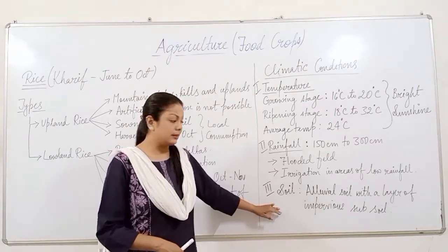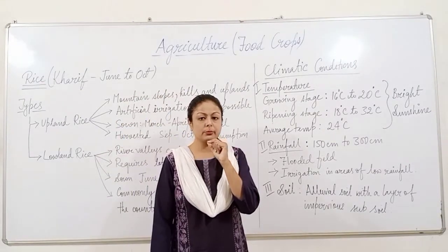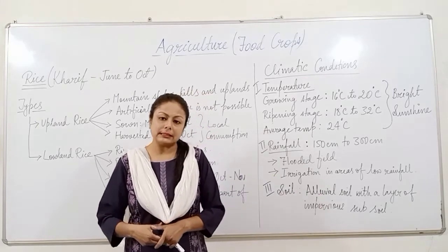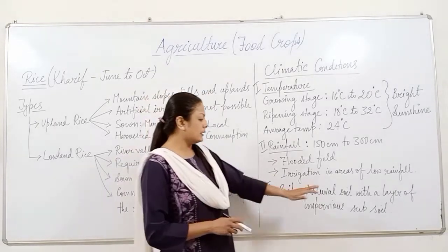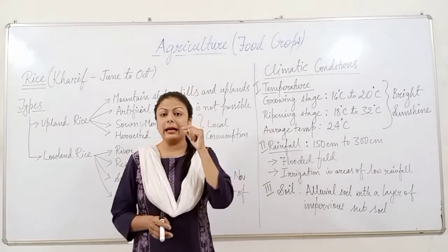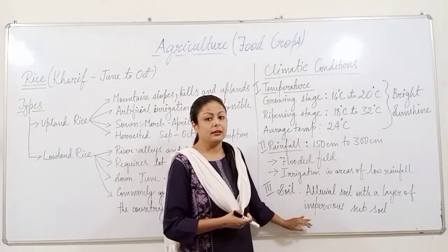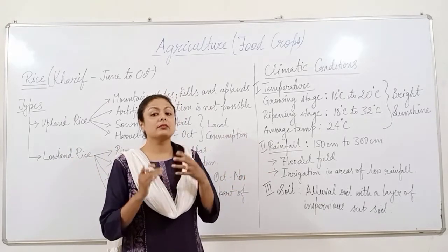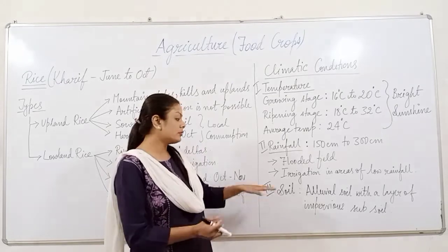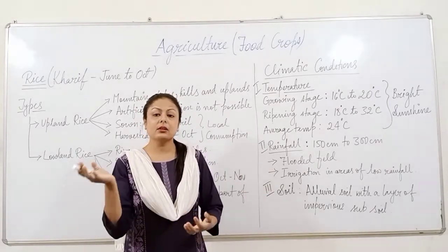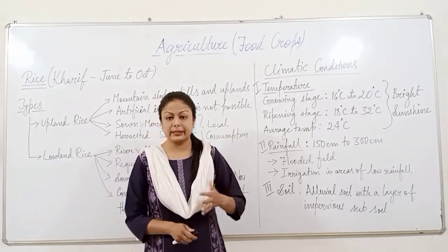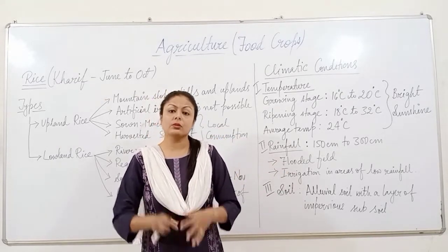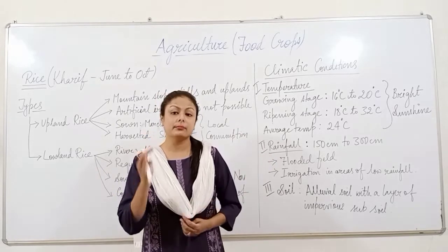The most suitable soil for growing rice is alluvial soil, which is found extensively in river islands and deltas. If the soil has a layer of impervious subsoil, that layer can hold water, keeping the field flooded so rice grows very well. Rice can also grow on hilly terraces through terrace farming, and even in red soils. It has become a very important staple crop for large populations all over the world.